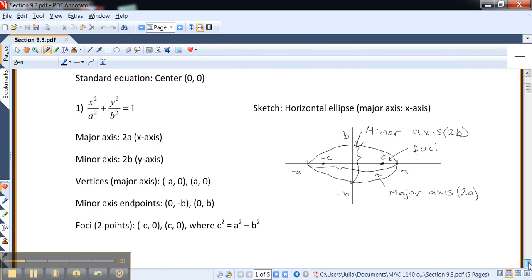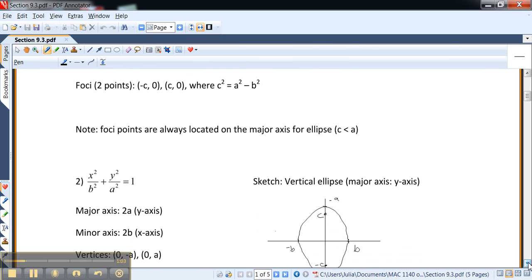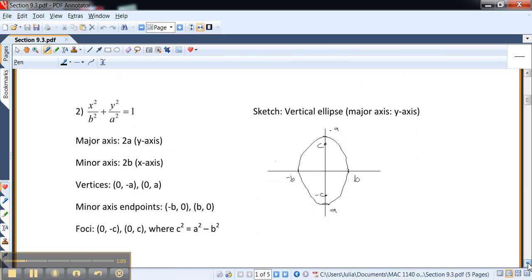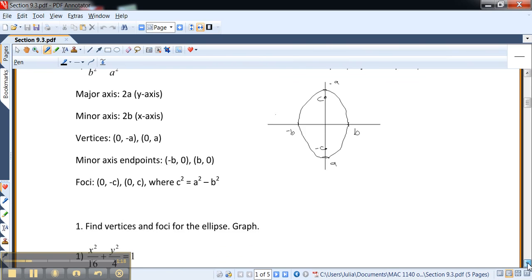So the idea is that here is the example of the vertical ellipse. And this time the major axis is the y-axis because the larger number, the square of it, is under y. And again, it's equal to 1. So let's take a look at some examples.